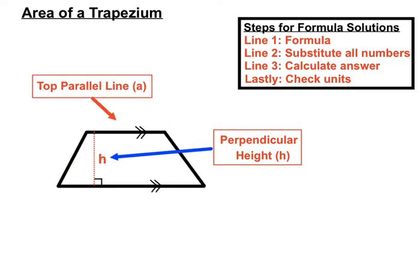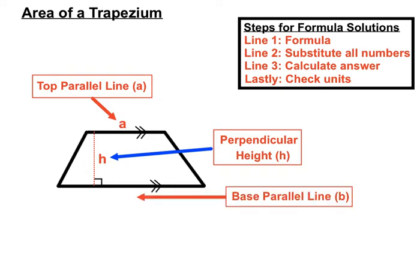Now the top parallel line for trapeziums we usually name a, and the base parallel line we'll call b, just to give us something to work with here. And we'll piece together a formula for finding the area of a trapezium using a, h, and b.